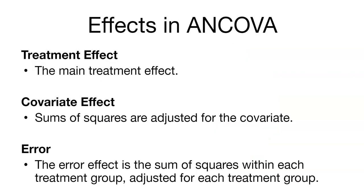The three effects in ANCOVA are: the main treatment effect — in this case, species of fish influencing its weight; the covariate effect — the influence of the length of the fish on its weight, adjusting the sum of squares for the covariate; and the error effect, which is the sum of squares within each treatment group, adjusted for the covariate.